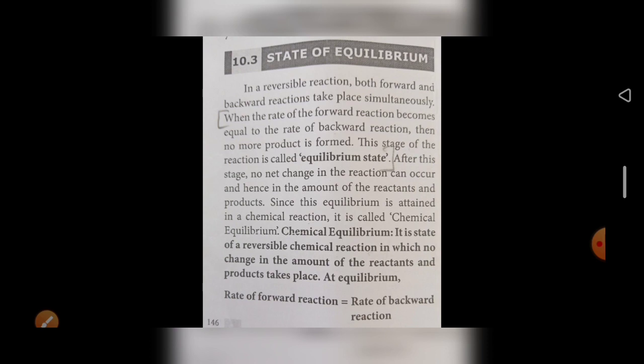For example, take calcium carbonate — that is limestone, sunnambu. That is CaCO₃, which on decomposition gives CaO plus CO₂. In this reaction both forward and backward reactions also take place. When the rate of forward reaction becomes equal to the rate of backward reaction, then no more product will be formed.